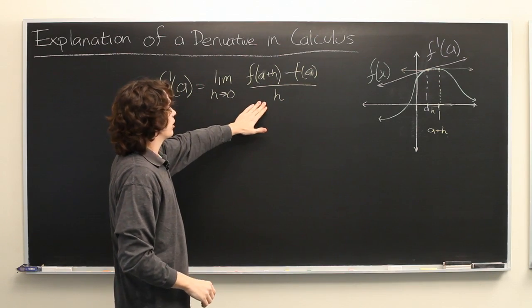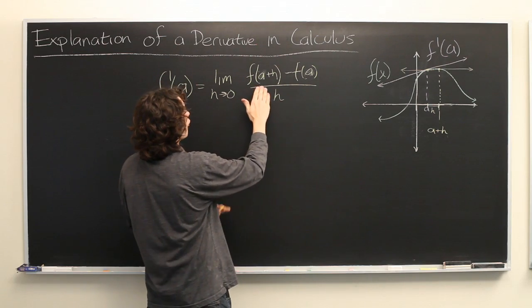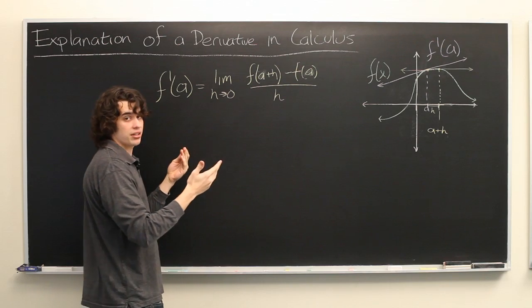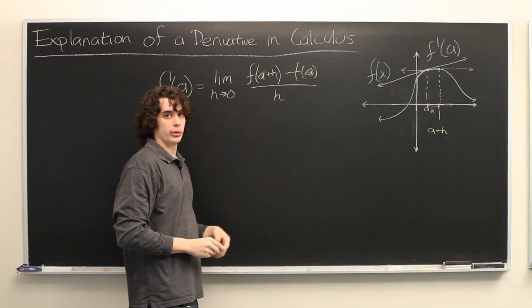If you can compute this limit, you can find the derivative. Typically, it will involve expanding both of these expressions based on whatever f of x is, and then canceling out the h so you can simply plug in zero directly.